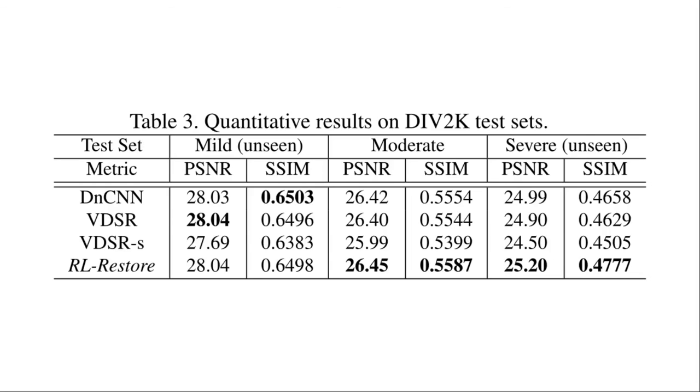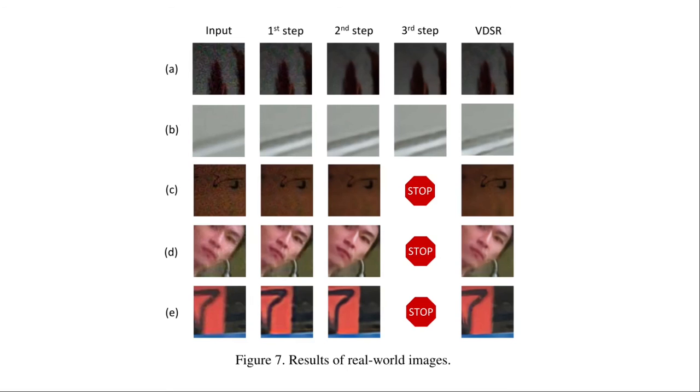These are the quantitative results seen on the synthetic data. The clean images from the dataset are distorted and passed through the RL-Restore algorithm to obtain the restored image. The restored image and the original image are compared and the PSNR and SSIM metrics are obtained using both these images. We can see that the RL-Restore algorithm performs well, especially for moderate and severe distortion. We can also see that the RL-Restore algorithm performs well on real-world images.